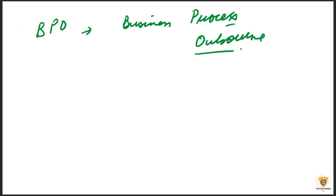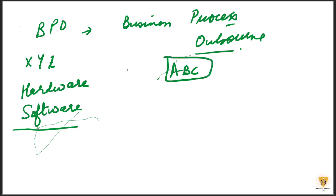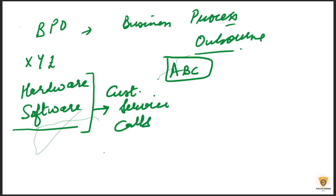So what is happening and how does it work? Think of a XYZ company that deals with hardware and has also made a software. Apart from this, there is another company — let's call it ABC. If we create a software company, then customer service calls will also be coming, right? Or they will also be working on back-end, like data entry.